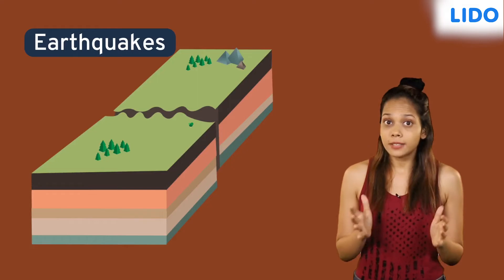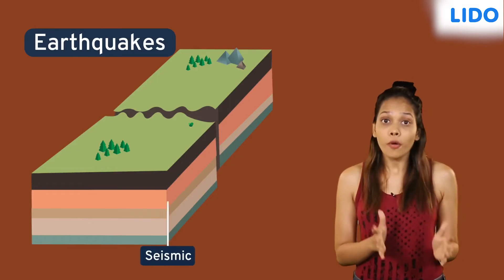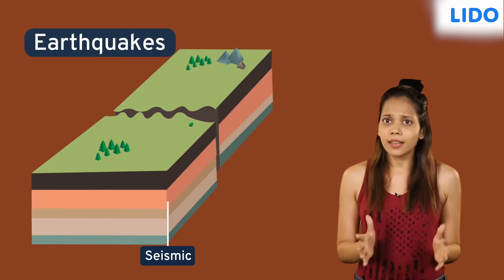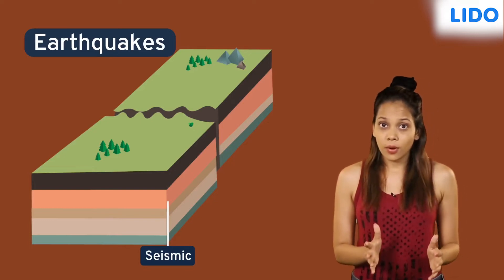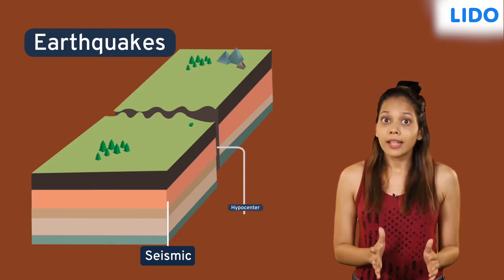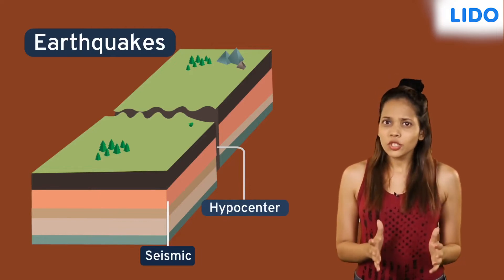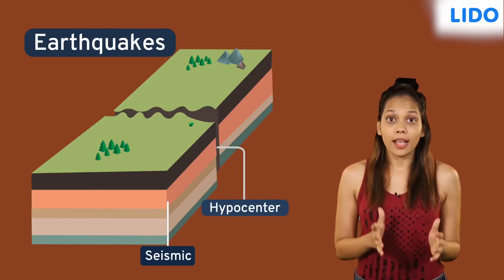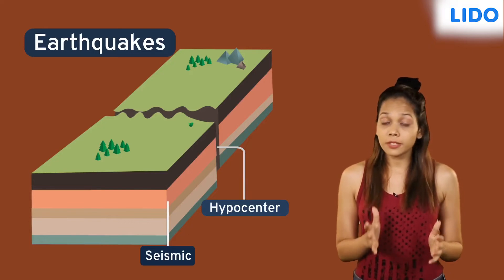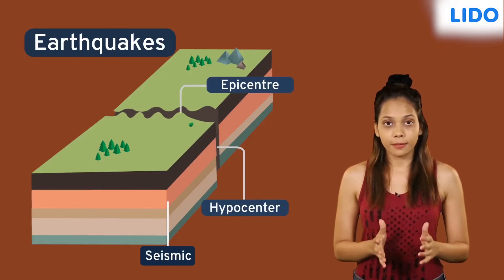These weak zones are called seismic or fault zones. The place inside the earth's crust where the earthquake begins is called the hypocenter. The position directly above the hypocenter on the surface of the earth is called the epicenter.